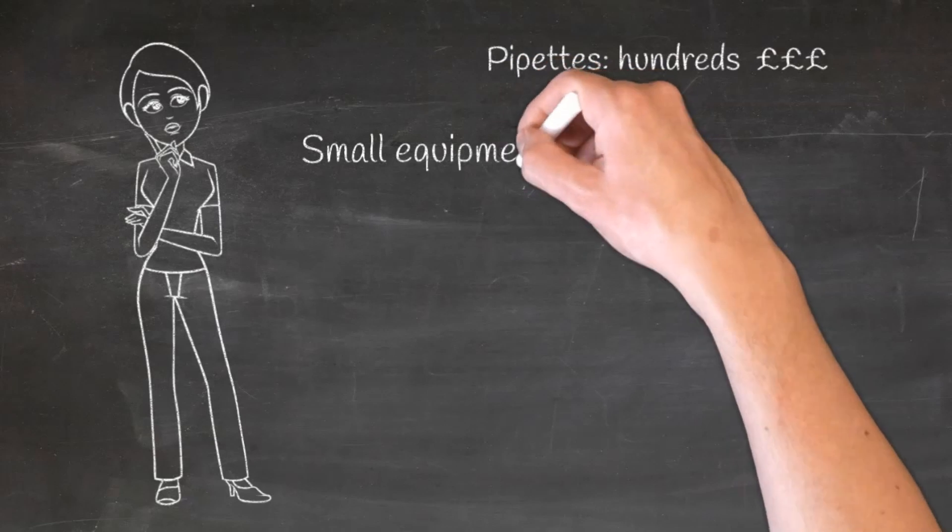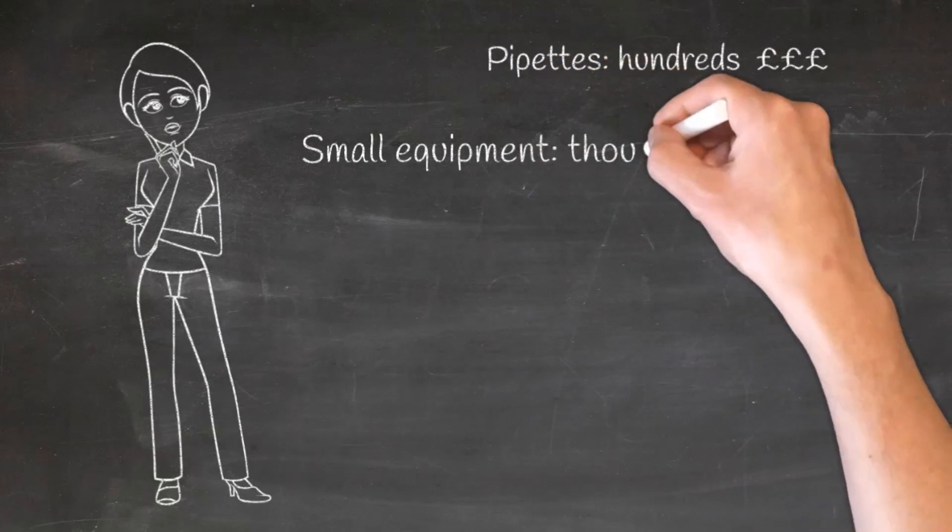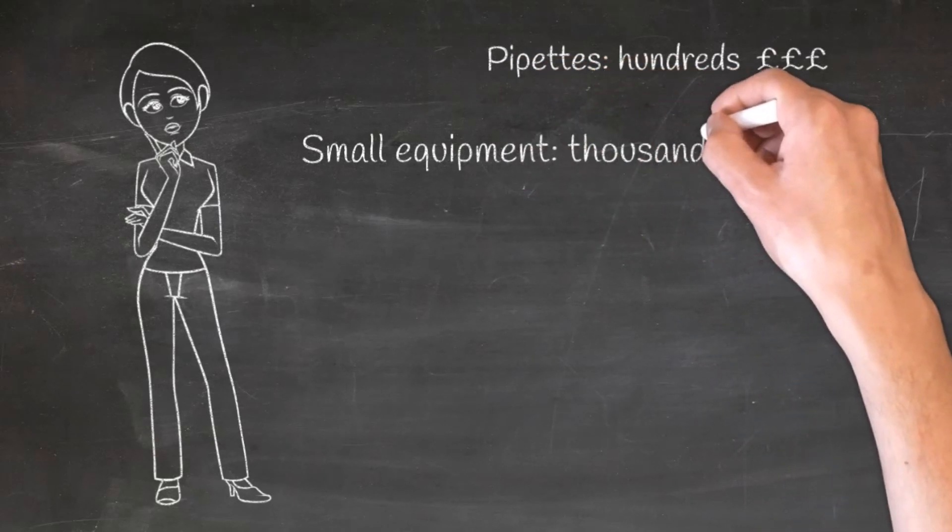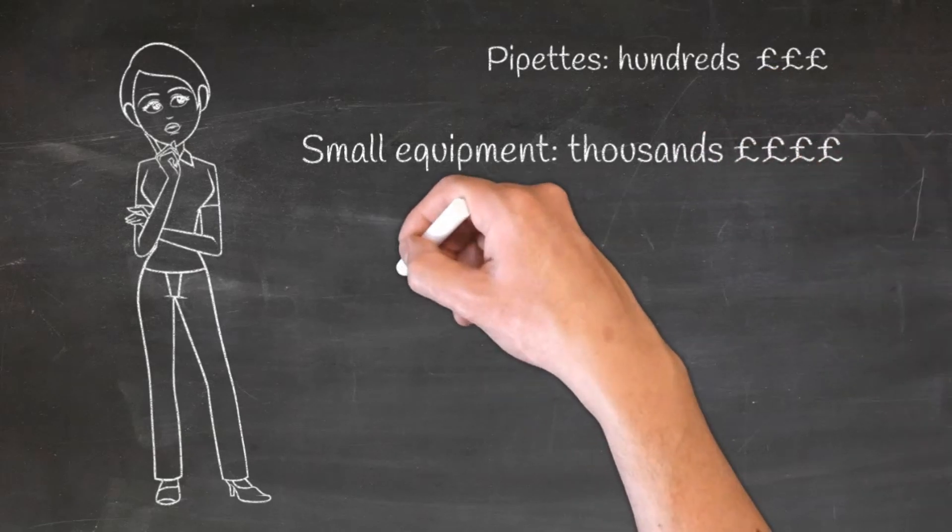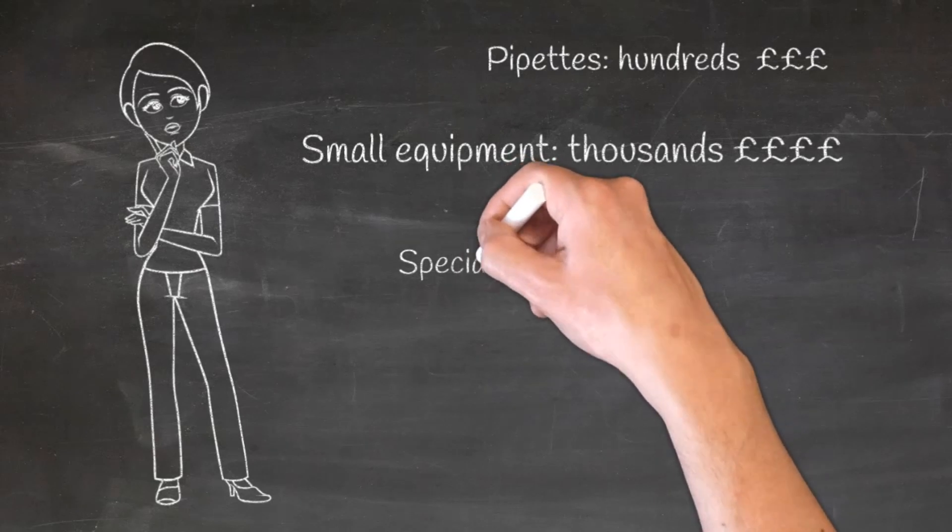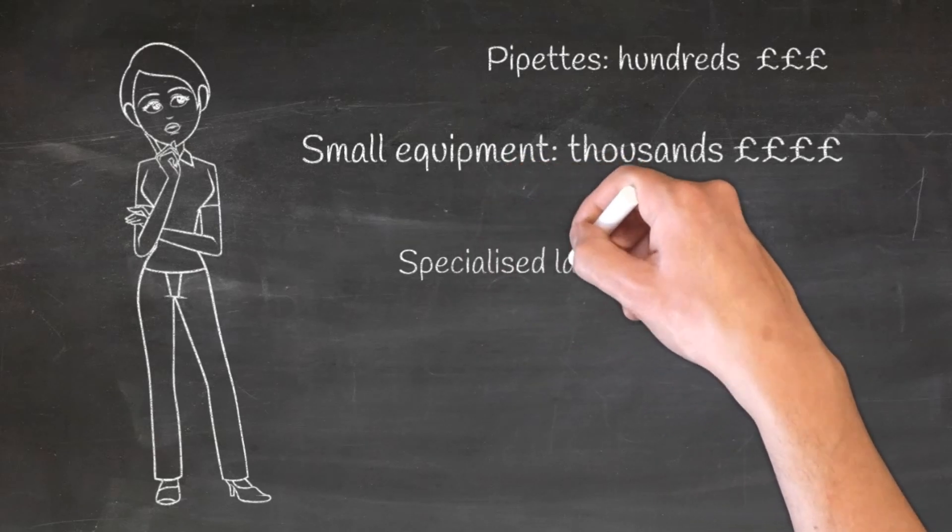Then for small equipment, most labs would have at least a half a dozen pieces of little equipment, things that sit on top of the bench like smaller centrifuges, shakers, rollers, things that heat or cool things, that sort of thing. Those will cost a few thousand pounds each.